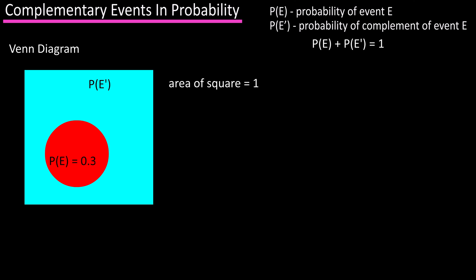So, if I said the area of E is 0.35, then 1 minus 0.35 equals 0.65, and that is the area of E prime.